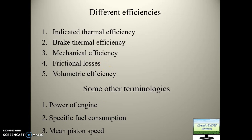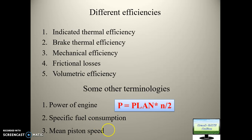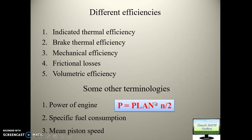Now some important terminologies. The first is the power of the engine — this is a very important equation and GATE frequently asks questions from it. Power of engine = P × L × A × N × n / 2, where: P is indicated mean effective pressure, L is the length of stroke, A is the area of the piston, N (capital) is the speed of revolution in RPM, and n (small) is the number of cylinders.